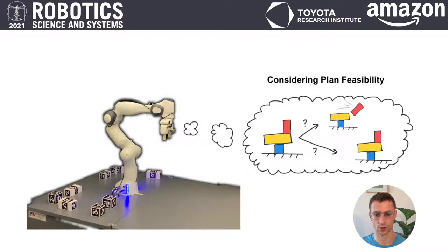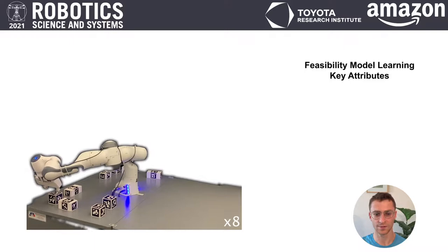Thus, we take a learning approach. The robot is given all object properties as well as the ability to localize, pick, and place blocks. What it must learn is how to accurately predict whether or not an abstract plan is feasible.